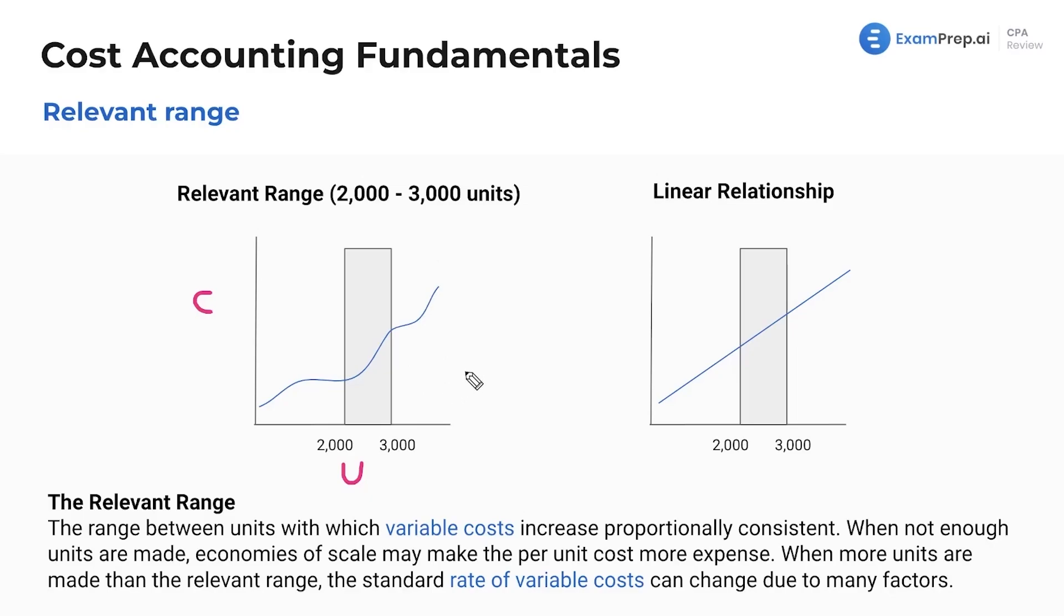Within the relevant range, variable costs are the same per unit. That's what I'm drilling in here. So within this relevant range, maybe variable cost per unit is $10. But then here it's $20, $19, $22. But within the relevant range, variable costs remain at a standard cost.